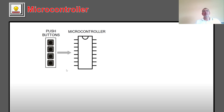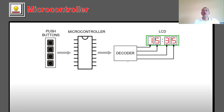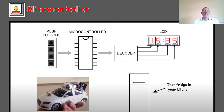Let's see some examples of what you can do with a microcontroller or Arduino. If you connect push buttons with a decoder, you can build a digital clock. You can also control a car using a microcontroller. Microcontrollers are used everywhere — in kitchen appliances, drones, cars, car garages. There are a lot of applications for microcontrollers.